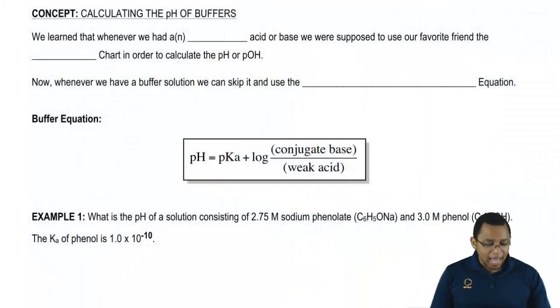We learned that whenever we had a weak acid or a base, we had to use our favorite friend, the ICE chart, in order to find pH or pOH.